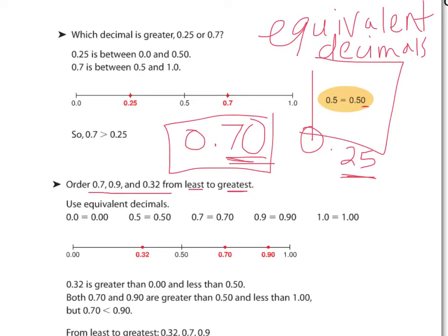Makes it really easy to compare 32, 70, 90. We know that this is the smallest decimal, this is the middle decimal, and this is the largest decimal.